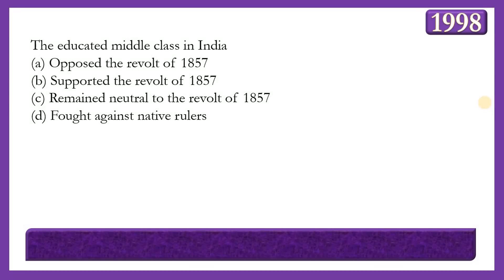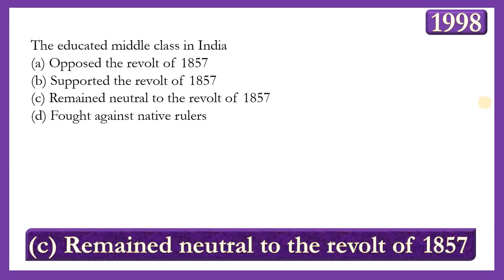Next question: The educated middle class in India during 1857 — did they oppose, support, remain neutral to, or fight against the revolt? The answer is option C — they remained neutral to the revolt of 1857 — because they thought they were in favor of the Britishers, believing the British would lead India toward development and eventually grant self-rule.